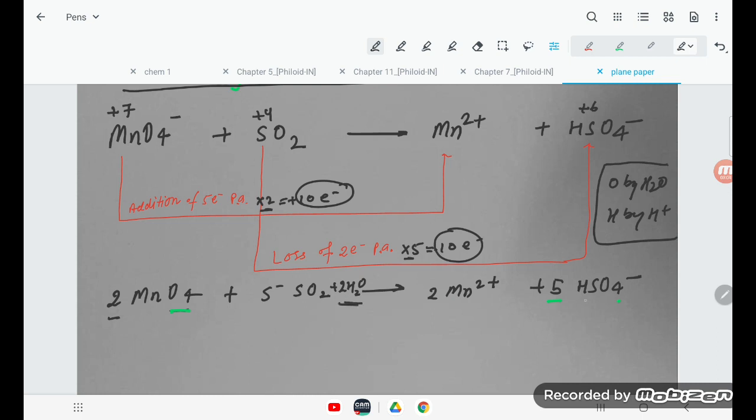Now see the hydrogen. Here is 4 hydrogens. This side how many are there? 5. So what we need to do? We need to add H+ also. Which side? We need to add this side only so that we can make everything equal.